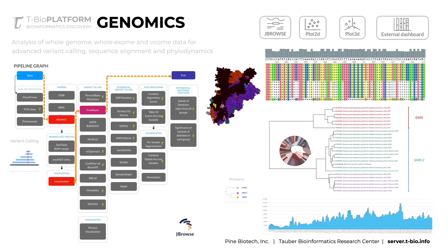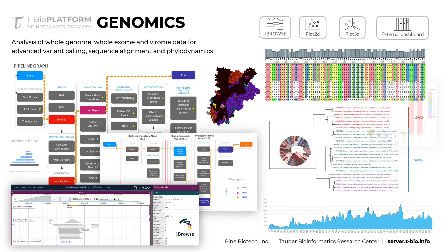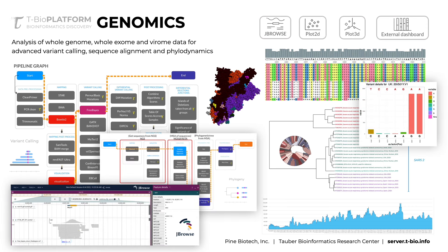Another type of data that can be analyzed on the platform is genomic data, where we can process FASTQ files for variant calling and finding differences between frequencies of mutations, as well as analysis of multiple sequence alignment with phylodynamics and even mapping of those results onto protein structures.